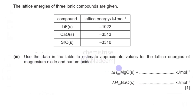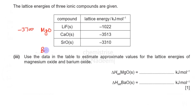The next part asks us to estimate lattice energies of MgO and barium oxide. Magnesium is above calcium in the periodic table, so MgO will have a more negative value because Mg is smaller with greater charge density — a value like −3600 or −3700 kJ/mol is reasonable. Barium is below strontium, so it is larger with less charge density — its value will be less negative, something like −3100 kJ/mol or even less negative.